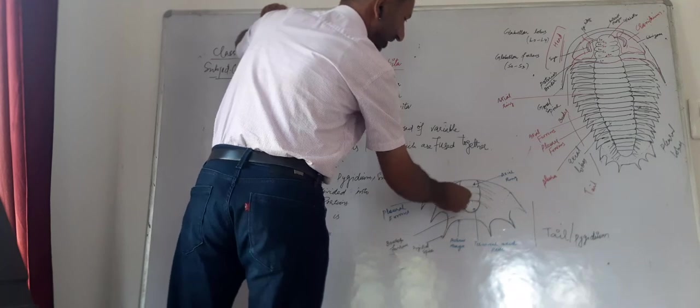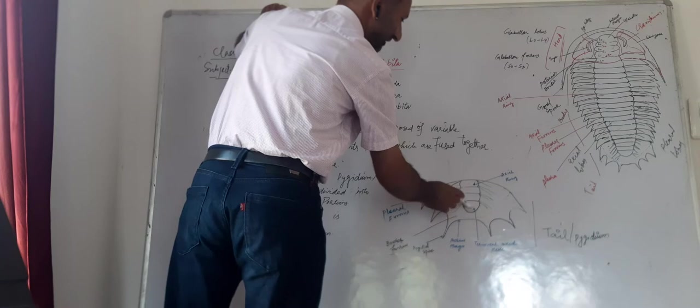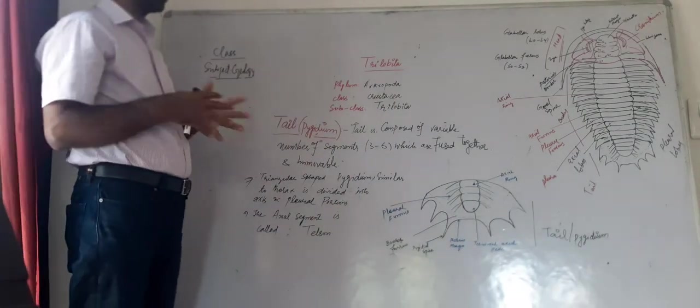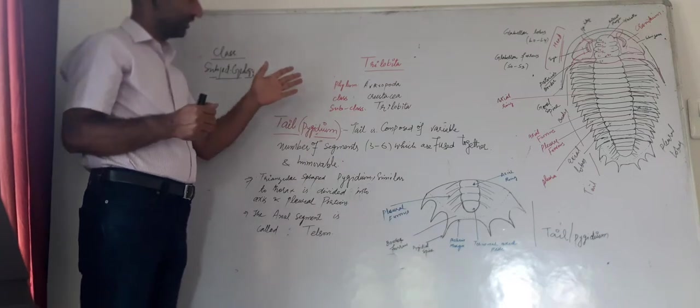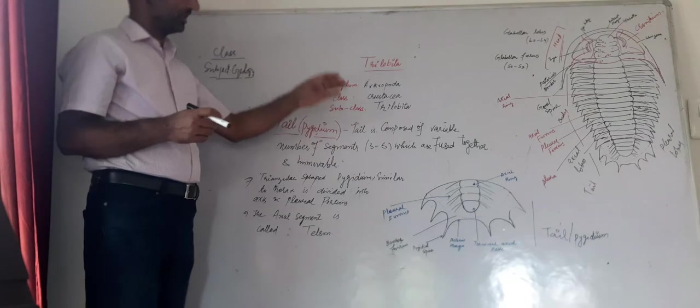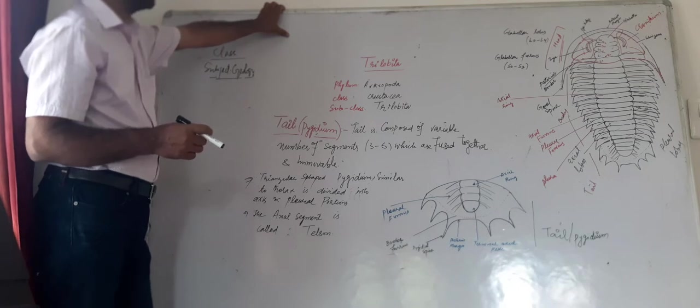And this is border flows, this dotted line is a border flow. This is terminal axial piece. These are all axial rings but this last one is known as the terminal, as it is the last one which is present in the tail. So this is a very simple information regarding the tail part or pygidium part of trilobita. I will repeat.